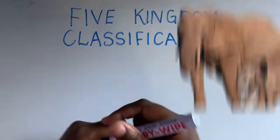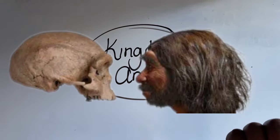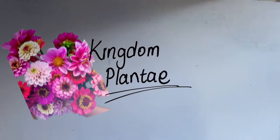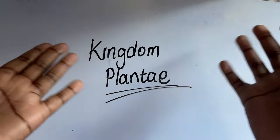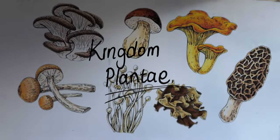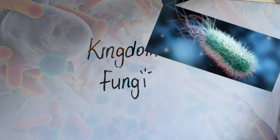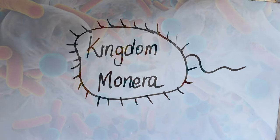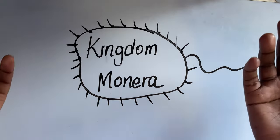Under the five kingdom classification we have five kingdoms. Under kingdom Animalia you'll find elephants, whales, snakes, snails, and humans. Kingdom Plantae is where you'll find trees, flowers — roses, tulips, and all kinds of plants. Kingdom Fungi is where you'll find fungus, things like mushrooms. And kingdom Monera is where we find bacteria — rods, cocci, and spirals — which describe the shapes of the bacteria.